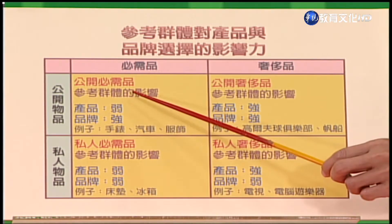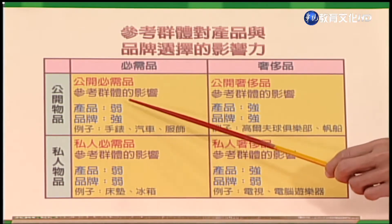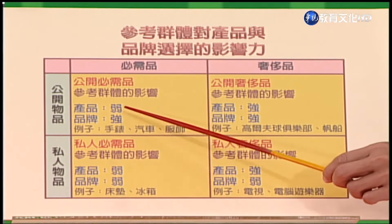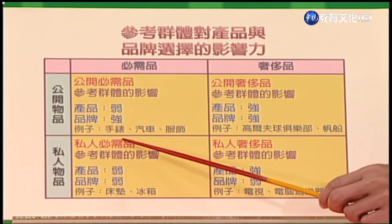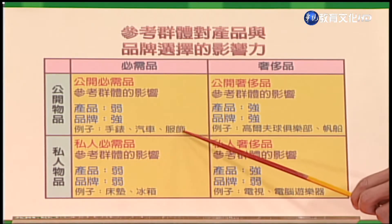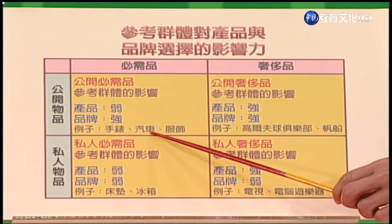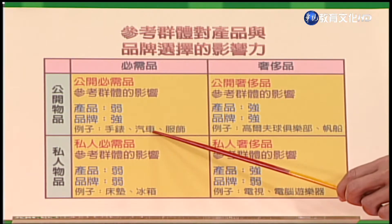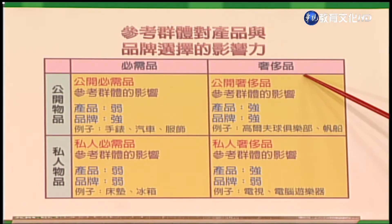由这两个变数，可以用图表说明参考群体的影响。横轴是公开物品跟私人物品，纵轴是必需品跟奢侈品，交叉后得到四个象限。第一个象限是公开必需品，参考群体对产品的影响力很弱，但对品牌的影响力非常强，比如手表、汽车、服饰。所以汽车行业非常重视品牌管理。